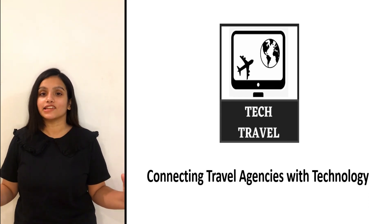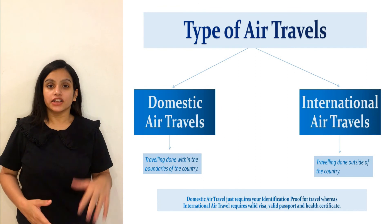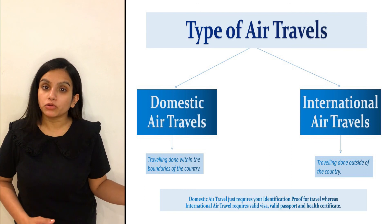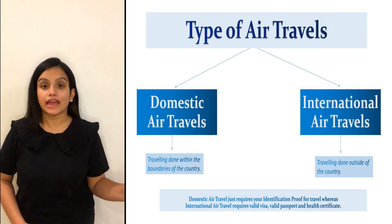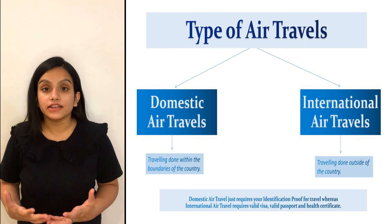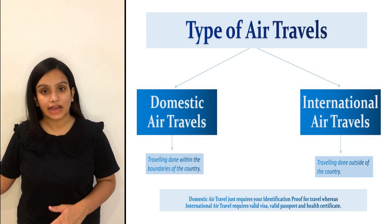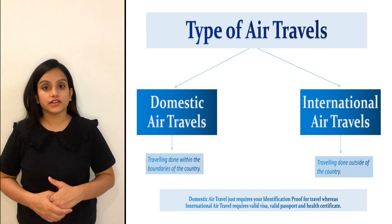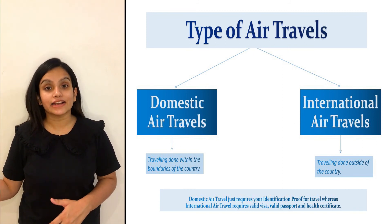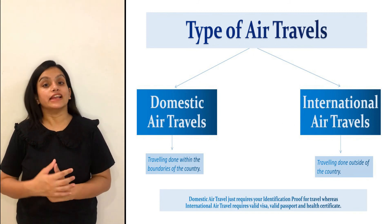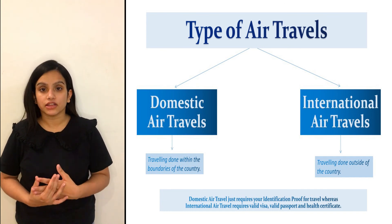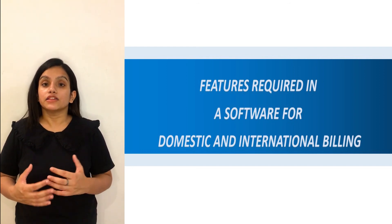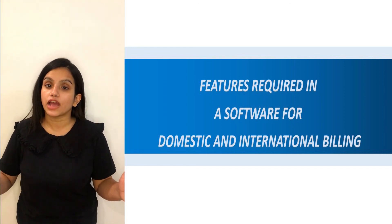There are two types of air travel: domestic air travel and international air travel. A travel done within the boundaries of the country is known as domestic air travel, and a travel done outside the country is known as international air travel. Domestic air travel requires only your identification proof, whereas international air travel requires a valid passport, valid visa, and a health certificate. To record both types of travel and generate the bill, we'll discuss what features a software should have.